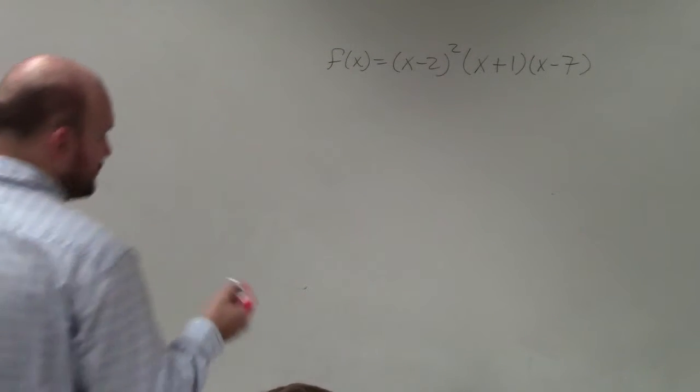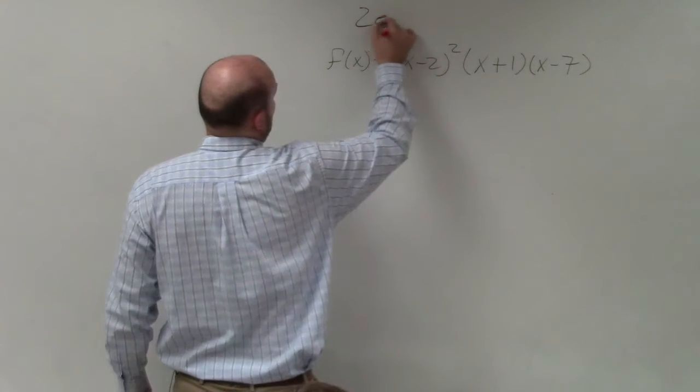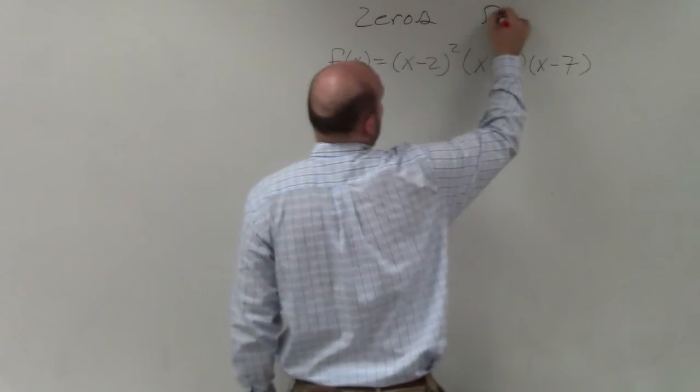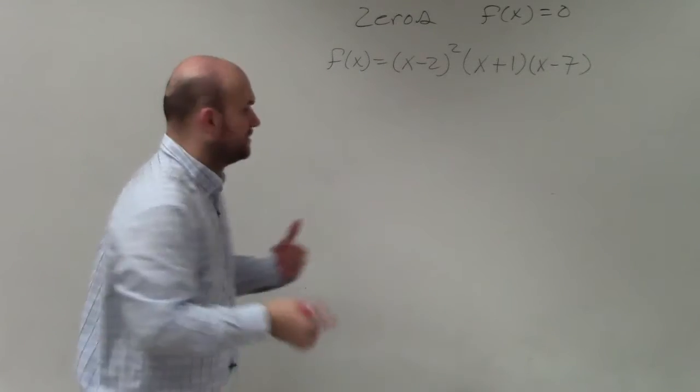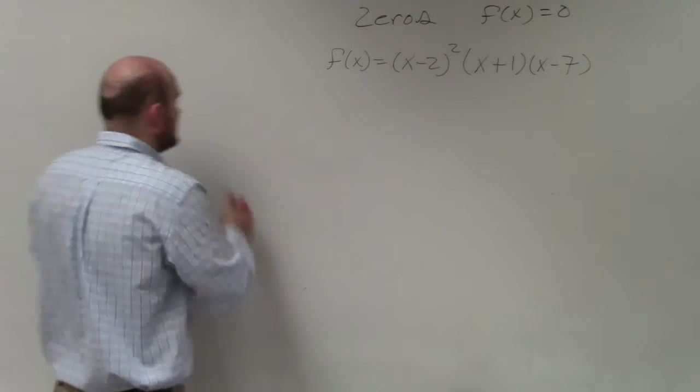In this example, we're looking for the zeros. The zeros are when f of x is equal to 0. That's what we're looking for - when f of x is equal to 0.